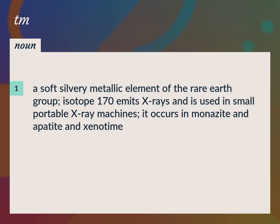A soft silvery metallic element of the rare earth group. Isotope 170 emits x-rays and is used in small portable x-ray machines. It occurs in monazite, apatite, and xenotime. Atomic number 69, thulium.